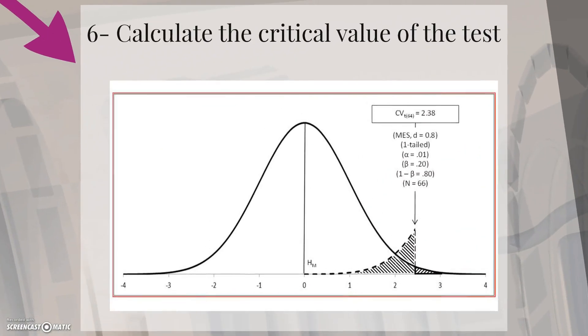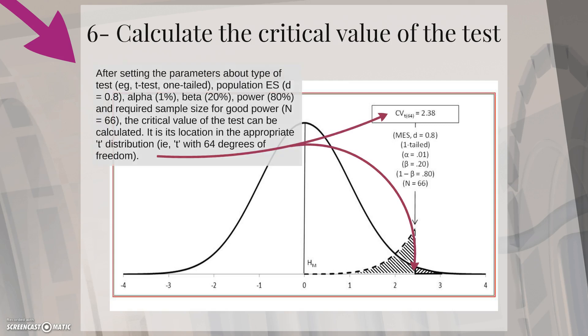And finally, calculate the critical value of the test. After setting the parameters about type of test, for example t-test one-tail, the population effect size, for example Cohen's D of 0.8, the level of alpha 1%, the level of beta 20%, and the level of power 80%, and calculating the required sample size for good power, in our case 66 subjects, the critical value of the test can be calculated.